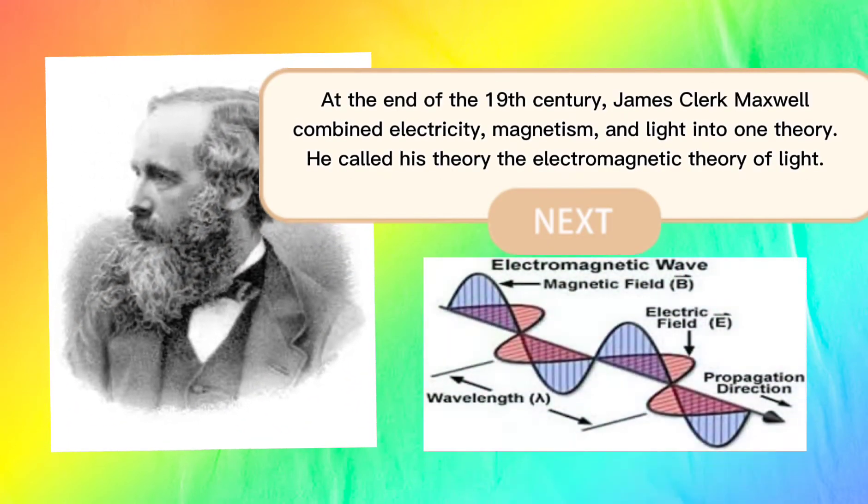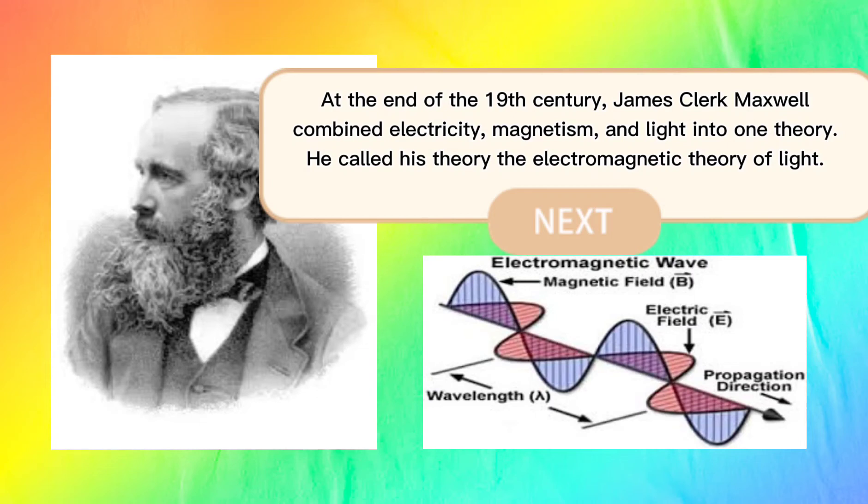At the end of the 19th century, James Clerk Maxwell combined electricity, magnetism, and light into one theory. He called this theory the electromagnetic theory of light.